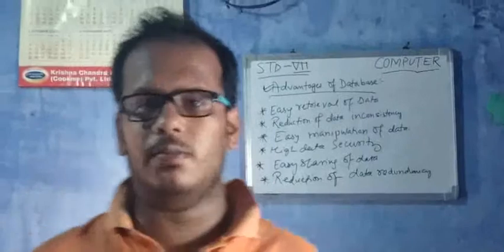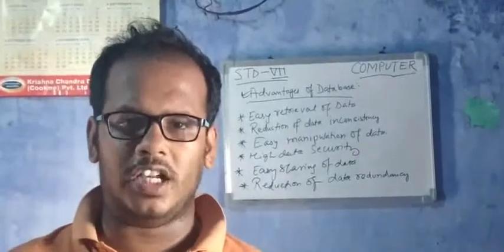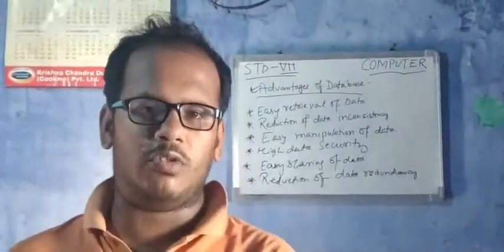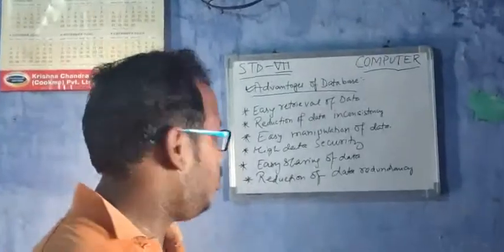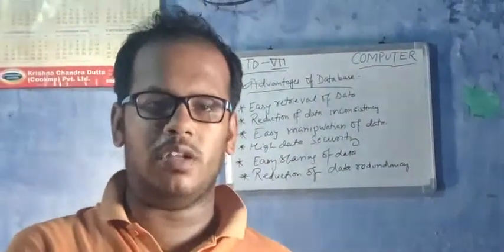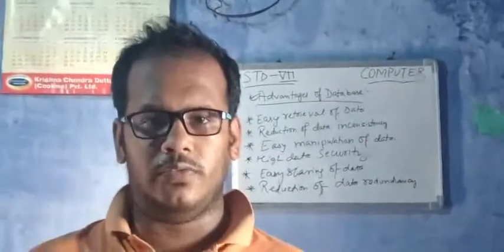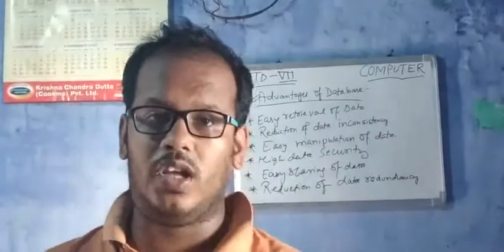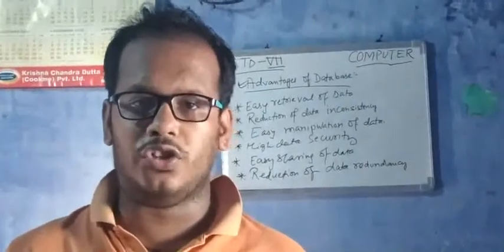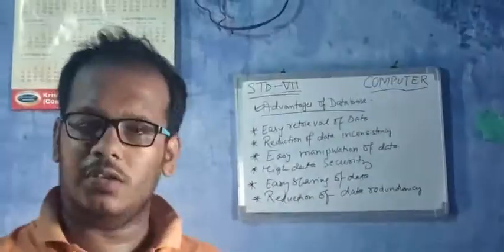Third, easy manipulation of data — the data can be manipulated, meaning with the help of that data you can do something else. Suppose personal information is kept in one database and academic information in another. You can easily manipulate it. Next year when you move to class 8, the class 7 data is removed and class 8 data is added. Each year the marks will be different — easily the manipulation of data will be done.